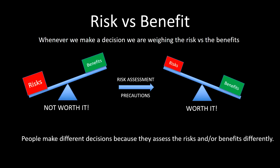Often people will make different decisions about whether to do something because they assess the risks or benefits differently. If someone was an adrenaline junkie who really enjoyed thrills, they would probably go on a roller coaster because the risk is relatively small and they really enjoy it. Somebody who didn't like roller coasters anyway would not take the risk because the benefits are much smaller. It's quite subjective — it depends on the person.